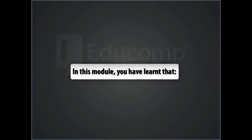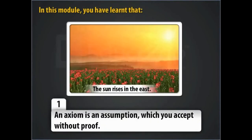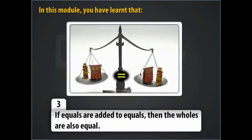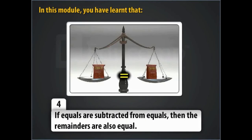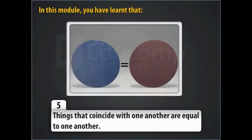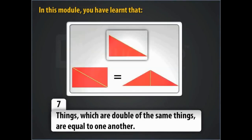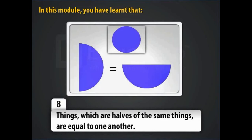In this module, you've learned that an axiom is an assumption which you accept without proof. Things which are equal to the same thing are equal to one another. If equals are added to equals, then the wholes are also equal. If equals are subtracted from equals, then the remainders are also equal. Things that coincide with one another are equal to one another. The whole is always greater than the part. Things which are double of the same things are equal to one another. Things which are half of the same things are equal to one another.